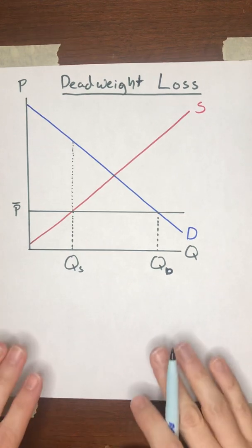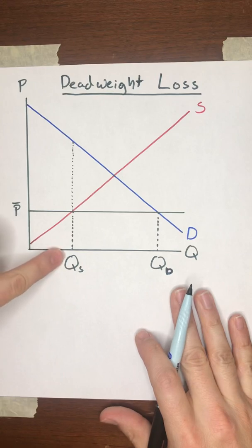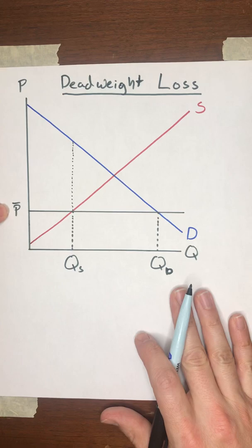The last effect of price ceilings that we're going to worry about is a deadweight loss. So we've got this quantity of units that will be supplied given the legislated price of P-bar.